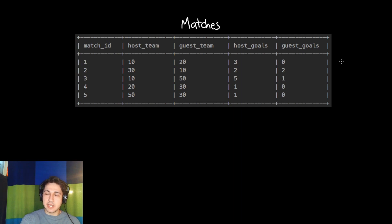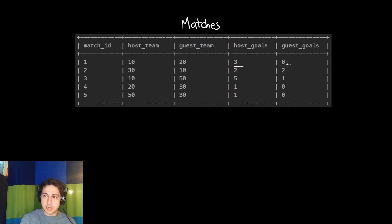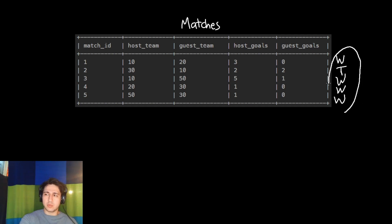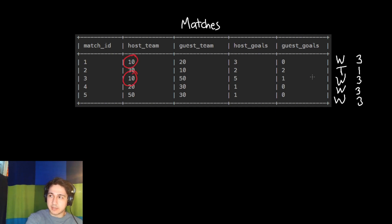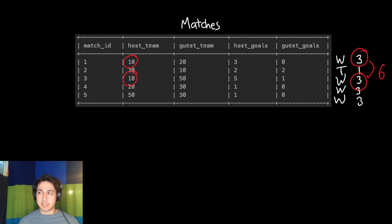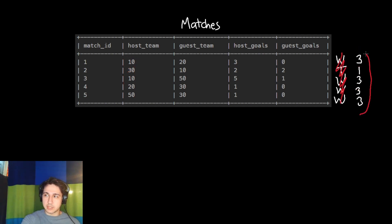Let's see if the host team won or lost each game — we'll add a W, L, or T. The first game was team 10 versus 20, three to zero, so the host team won. Then two to two — a tie. Then five to one — the host team won the third, fourth, and fifth games as well. Instead of returning W, T, or L, we want to return how many points each team got: a win is worth three points, a tie is worth one. That way we can sum team 10's three points here and three points there to get their total.